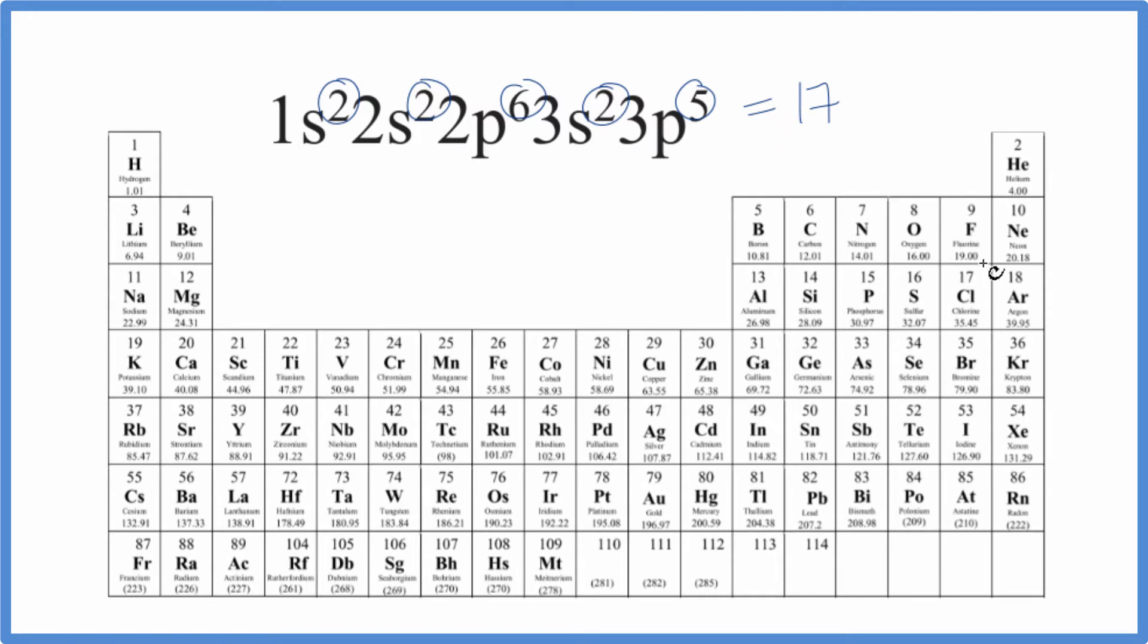So the number of protons, that's represented by the atomic number. So right here we have 17. 17 protons, so it would be equal to the 17 electrons—that's chlorine. So this electron configuration right here is chlorine.